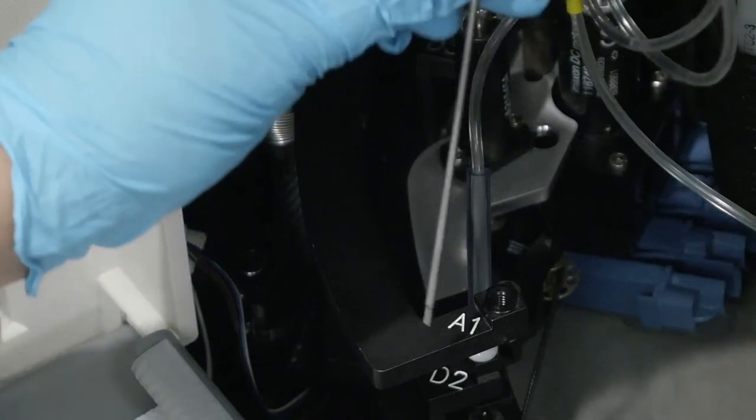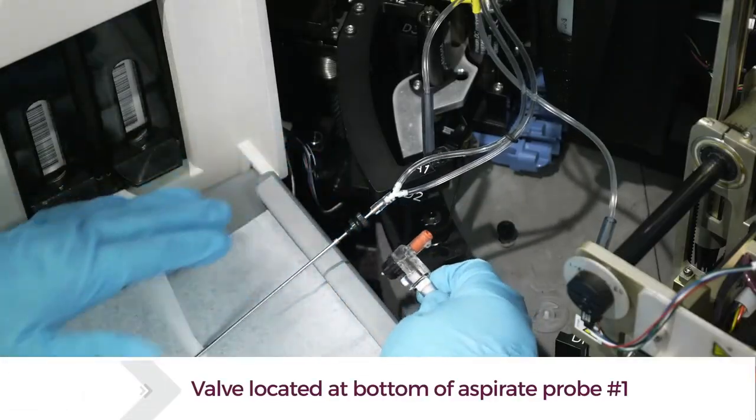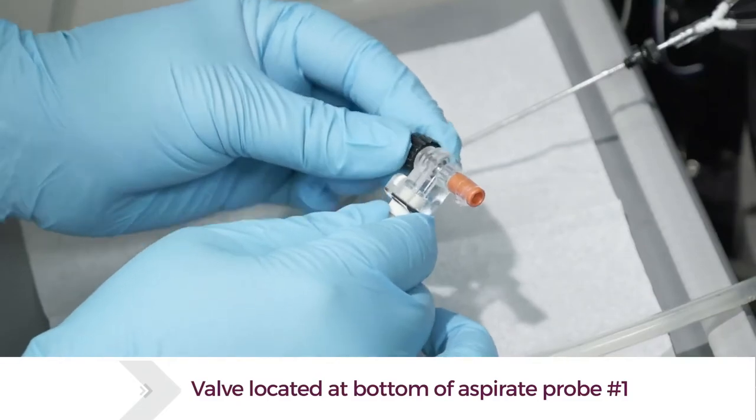By loosening and removing the probe, then locating and pulling the wash collar down, operators can easily replace the duct bill valve.